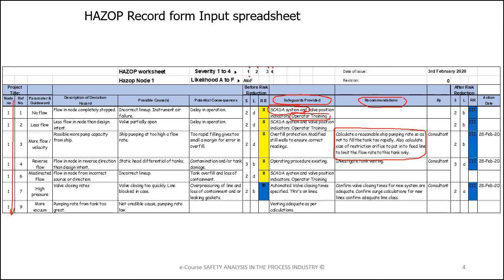At this stage of the course we will not do a video of the what-if PHA or the Process Hazard Analysis, as it is in many ways identical in structure to a HAZOP. Lesson 7, First Steps to Safety Analysis, covers the what-if procedure in full. Thank you.